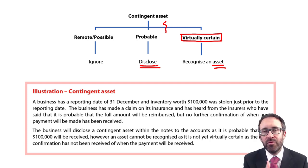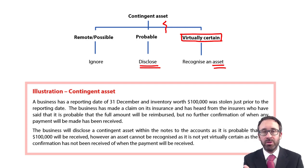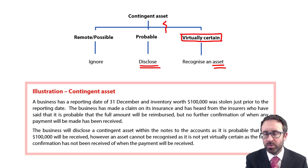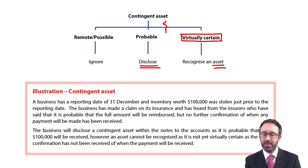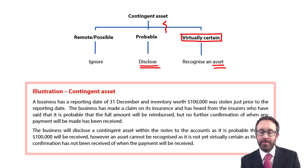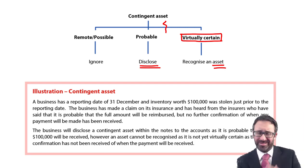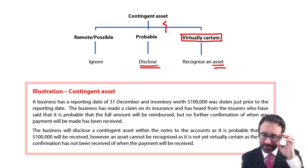Remember with provisions, a contingent liability that was only possible was disclosed. If the contingent asset is remote or only possible — less than 50% chance of happening — then we just ignore it. Not interested.